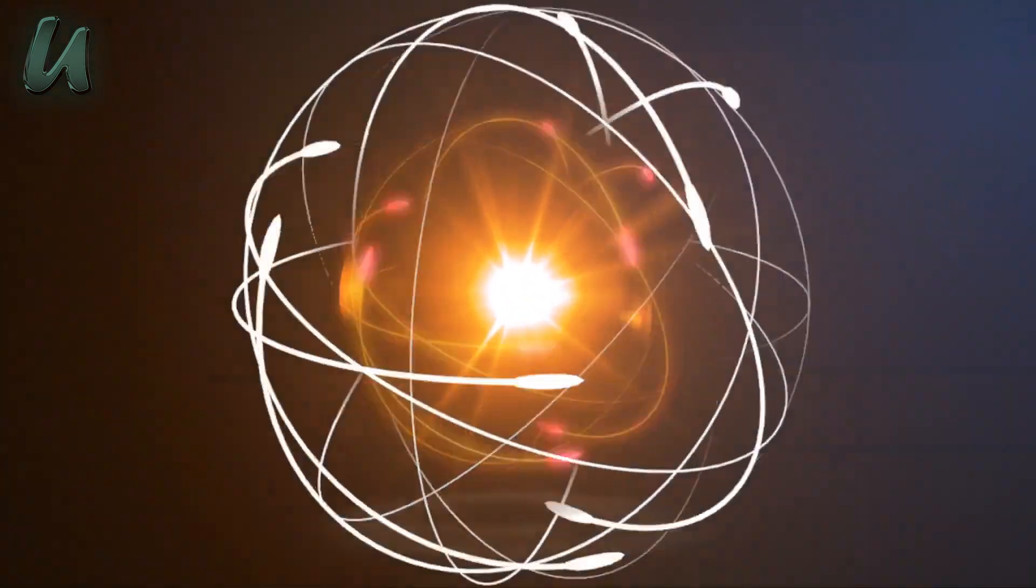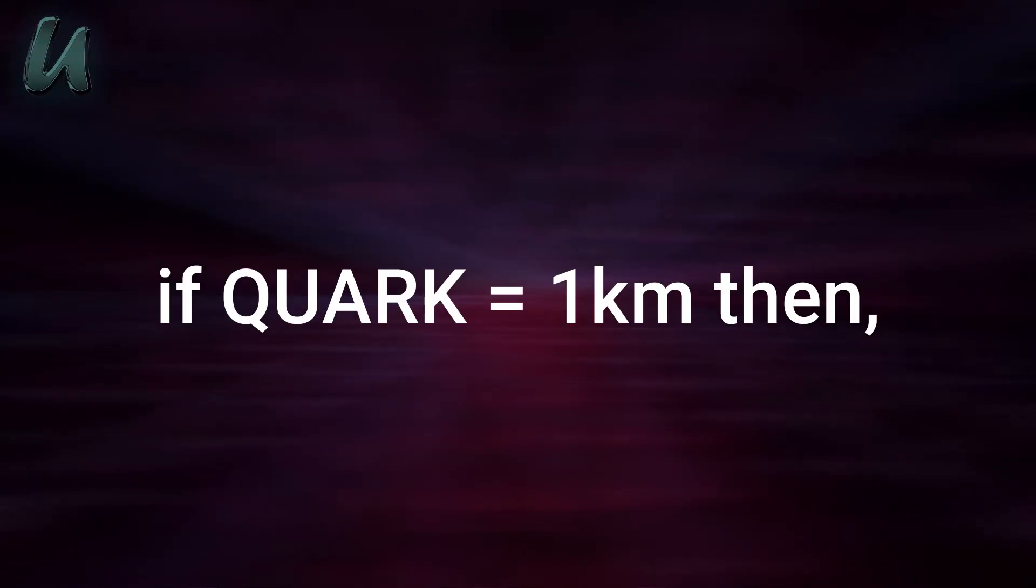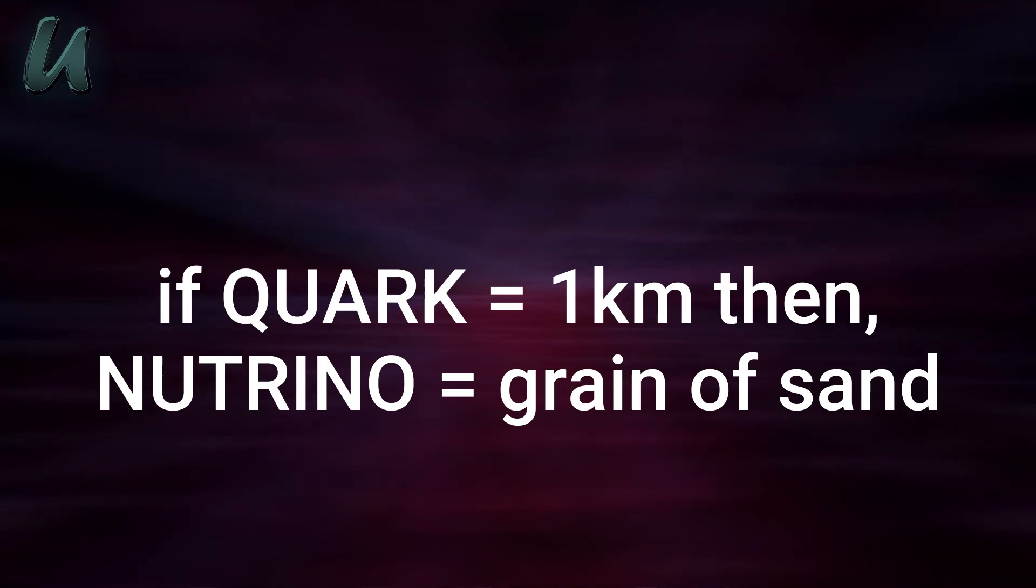So is there anything smaller than a quark? Yes, and this is a million times smaller than a quark. This is called a neutrino. A neutrino is 10 to the power minus 24 of a meter. This means if a quark was a kilometer in diameter, then a neutrino would again be the size of a grain of sand.